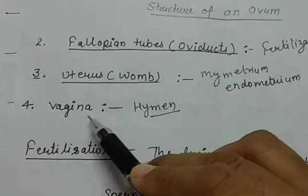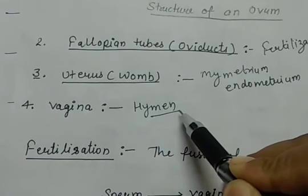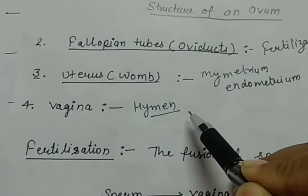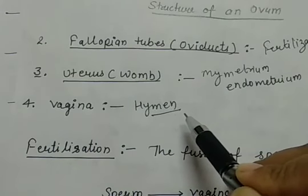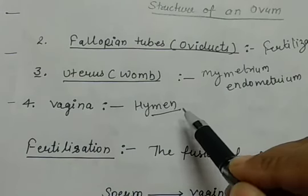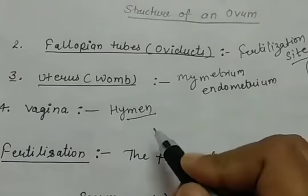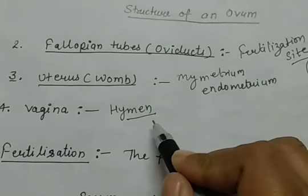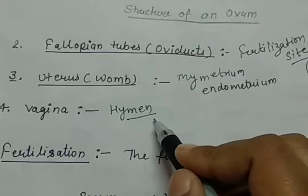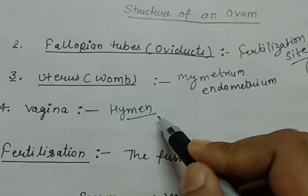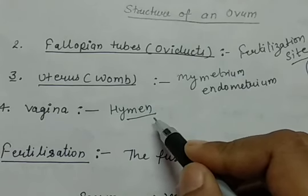This thin muscular membrane is present over the vagina until puberty and can be a sign of virginity. Virginity means having no sexual experience. This membrane is present if the person is a virgin or has no experience of sexual intercourse.